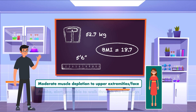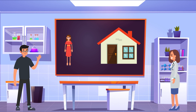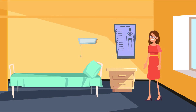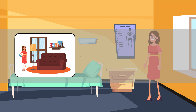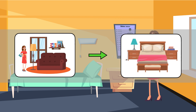In addition to this, she is awake, alert, and able to walk through the hallways without assistance. You discuss the case with her doctor who tells you the plan is to eventually send Jane home with the tube feeding. Since Jane is awake, alert, and able to be active, she's a good candidate to receive an intermittent or bolus regimen. It is actually preferred in this situation because it will allow her to be active during the day and avoid the need for feeding at night while she sleeps.